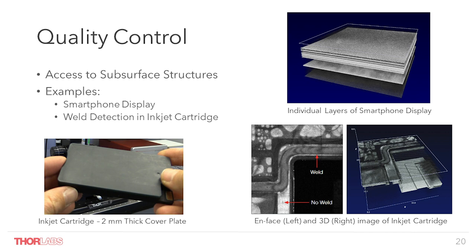Here we have two other nice examples for the use of OCT for quality control. On the top right we have a 3D image of a smartphone display — it is possible to see all the individual layers, the active pixel area, electronic circuits, and so on, allowing defect detection right after or even during the production process. At the bottom we have a standard inkjet cartridge which has a 2 mm thick cover plate welded onto the bottom part. The whole cover plate is pitch black in the visual range, but with a 1300 nm system like the Vega, we can see through the 2 mm thick cover and identify the weld — including an en-face image and a full 3D image. We will come back to this inkjet cartridge in just a few minutes.